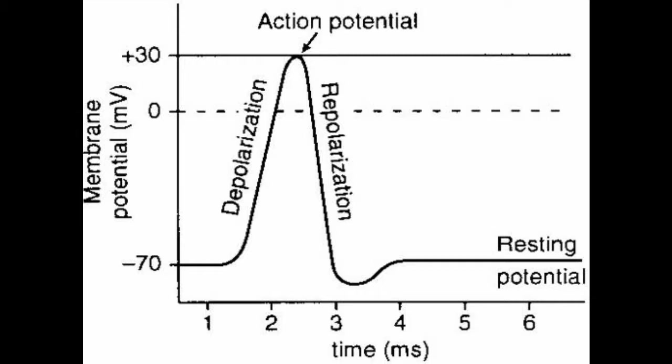At 30 millivolts, the sodium gates close and the potassium gates open, allowing for the outflow of potassium and the inhibition of the inflow of sodium. This causes the voltage to drop dramatically to roughly negative 90 millivolts.